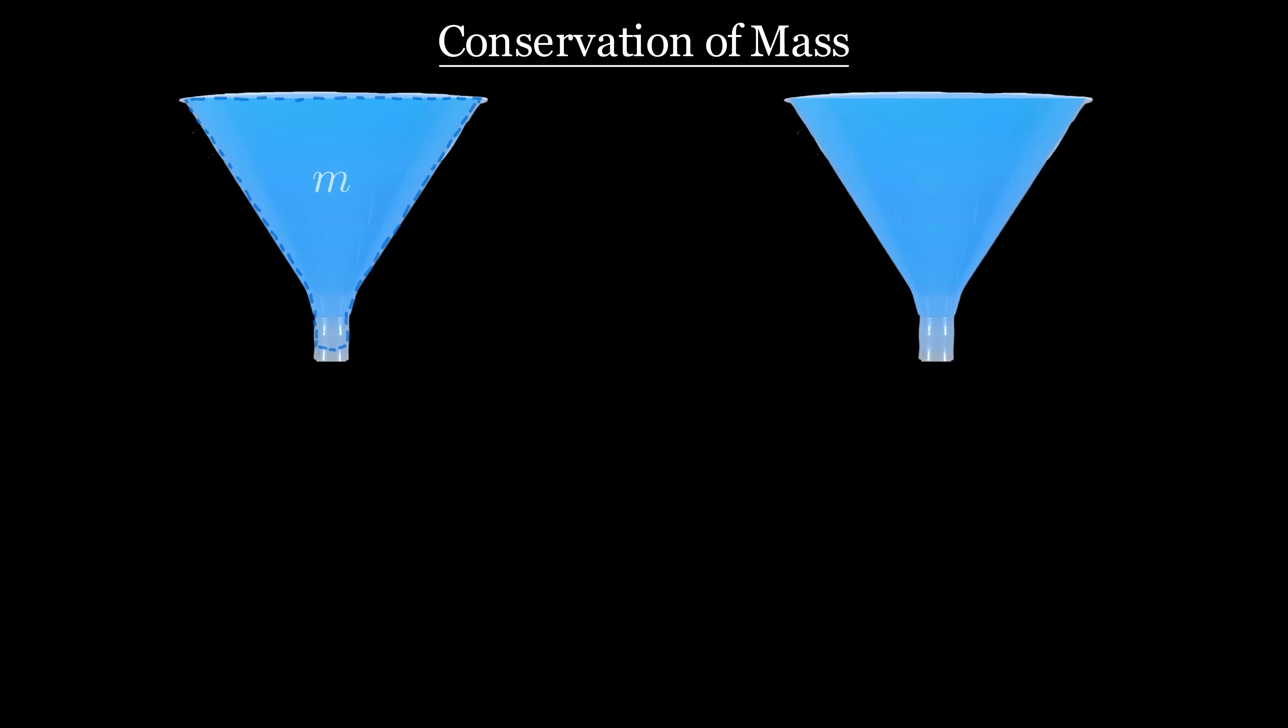First, using the conservation of mass, you know that how the mass of water changes with respect to time is going to be equal to the mass leaving at the outlet surface, aka the mass flow rate at the exit.